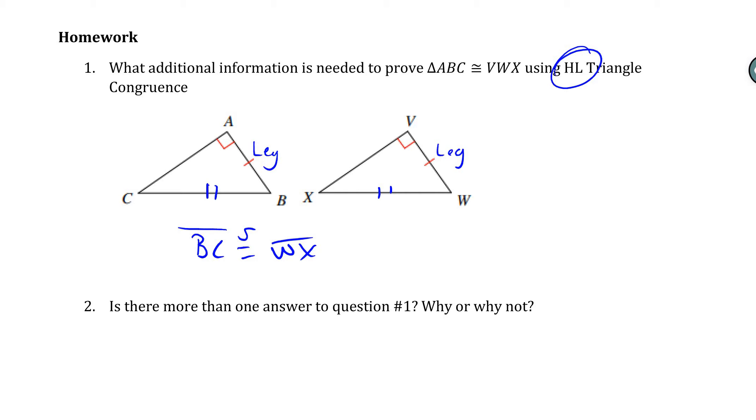Is there more than one answer to question number one? This is kind of a trick question because in class there was. The answer to this though is no, because there's only one hypotenuse in a right triangle. So that's kind of a trick question.